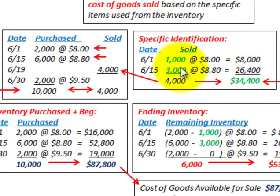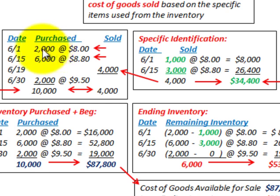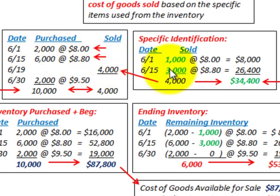So our total units sold were 4,000, and the total cost of that inventory — our cost of goods sold — was $34,400. We specified 1,000 units out of the 2,000 June 1st items, and 3,000 units out of the 6,000 June 15th items.